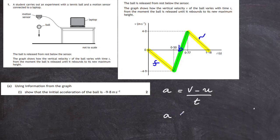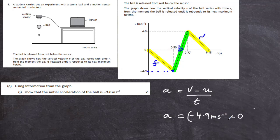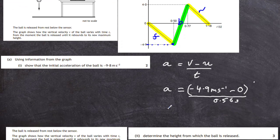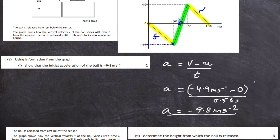Plugging in the numbers: acceleration equals the final velocity of minus 4.9, minus the initial velocity of 0, divided by the time of 0.50 seconds. Working that out gives acceleration equal to minus 9.8 m/s², which is the acceleration due to the force of gravity acting on the ball.